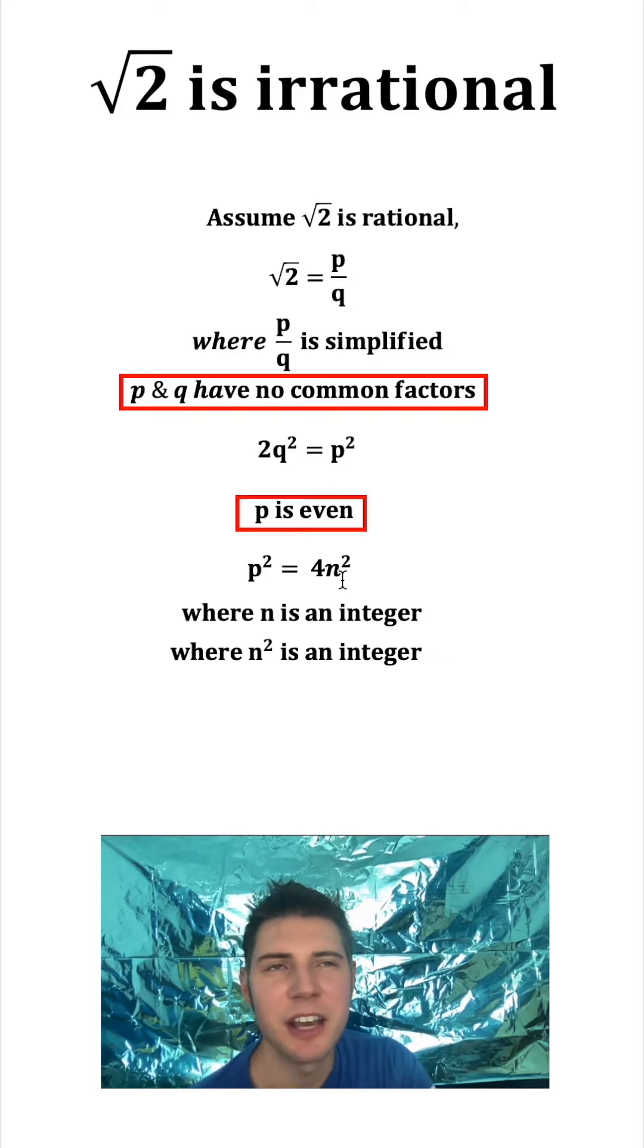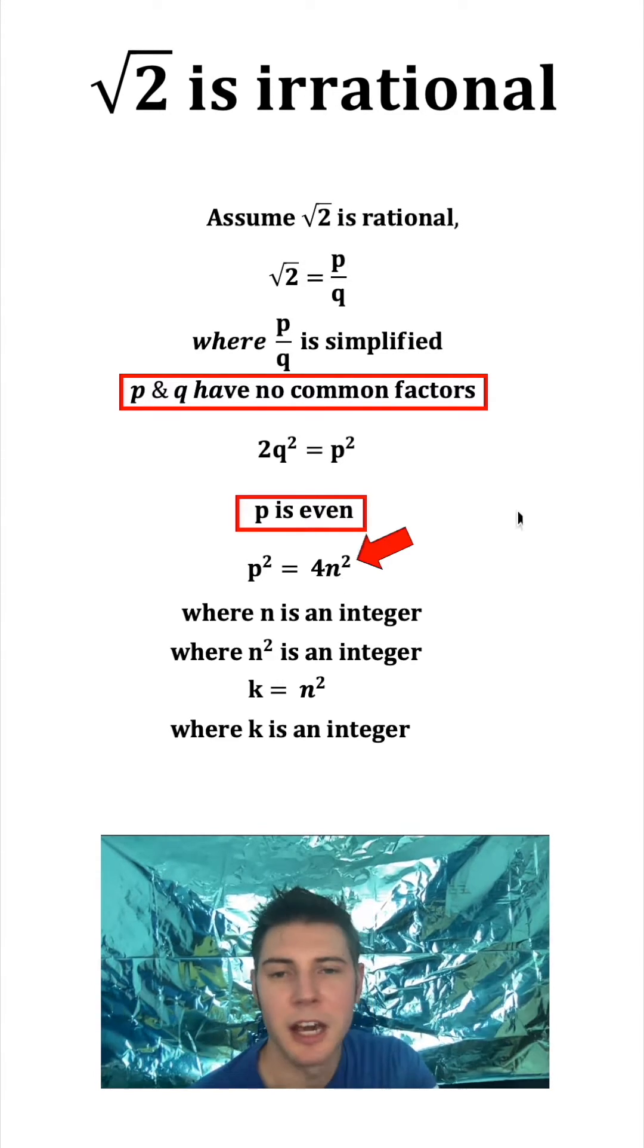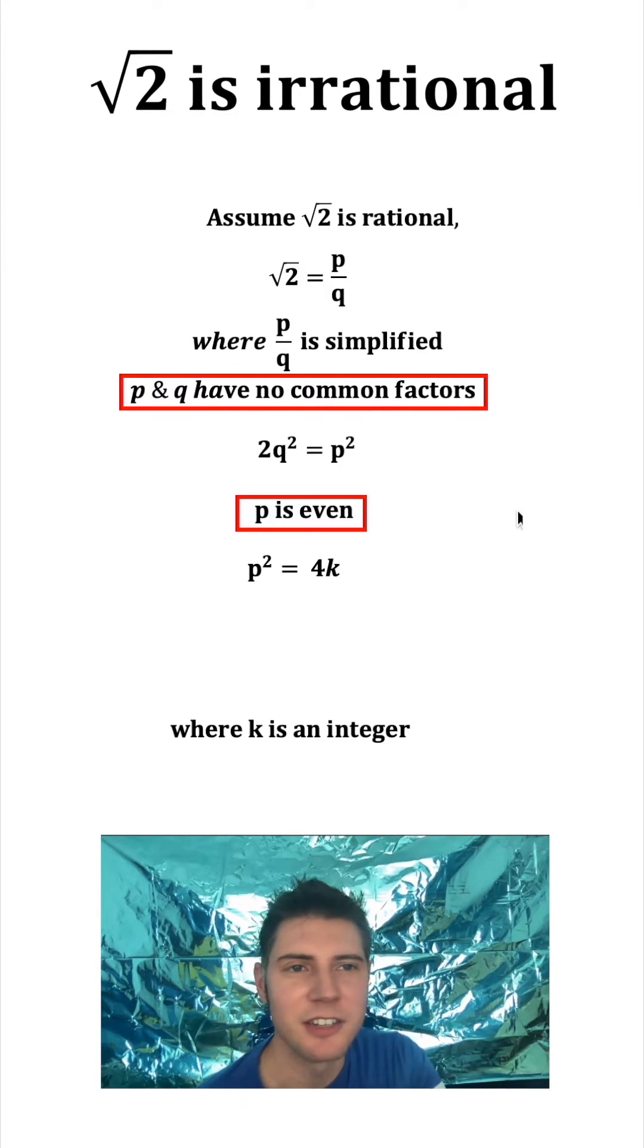Well, since N is an integer, that means N squared is also an integer. To simplify things, let's call K N squared. And we can replace this N squared up here with just a K. Let's clean this all up.